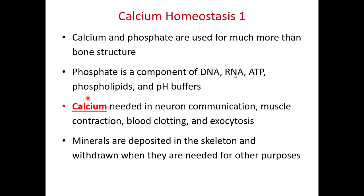We need calcium to release neurotransmitters from neurons and for electrical activity within axon terminals to be properly transmitted. We need calcium from the sarcoplasmic reticulum of muscles to initiate muscle contraction. We need calcium to initiate blood clotting — it interacts with many clotting factors, in particular factor five within the blood clotting cascade. We also use calcium to trigger exocytosis, such as the release of neurotransmitters.